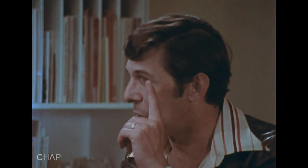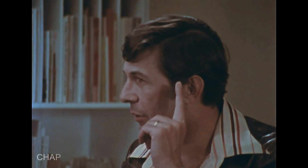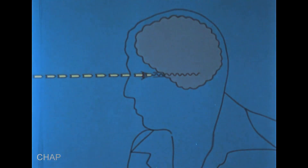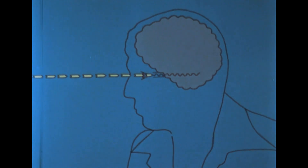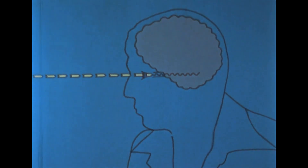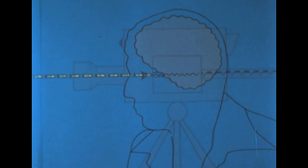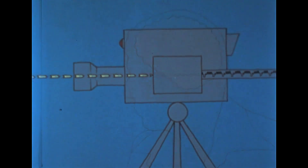The human eye. Light enters the eye, where it becomes an electrical signal, which is carried by the optic nerve into the brain for interpretation. Our eyes, in fact, function somewhat like a television camera.